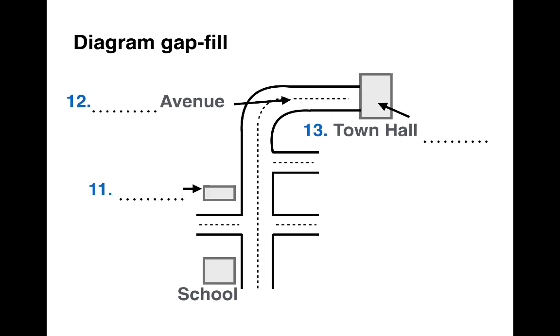Now let's move on to section 2. In this section you could have a gap fill, a multiple choice, or a matching exercise. Let's look at another gap fill, but this time it's a gap fill in a diagram. This is more difficult for many people because when you see a diagram like this, you're not sure where to look. It's not as easy as a normal list of questions. However, the technique is you should follow the numbers — the question numbers. Questions in the listening test always go in order. So we know that the recording will start with question 11, you'll hear that first, and then the answer to number 12, and then number 13. So follow the numbers of the questions around the diagram — that's the order that the speaker will describe the diagram in.